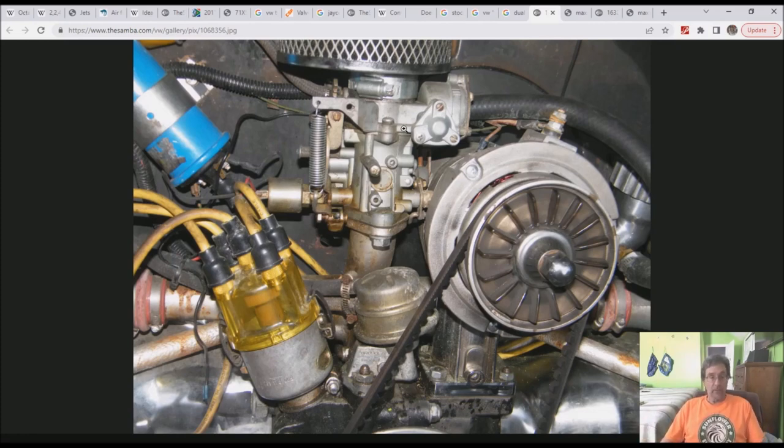From the factory they came with a carburetor like this - I think this is a Pict 34 of some sort. This kind of carburetor sits on top of a manifold. This happens to be dual port because it's got boots attached to a bunch of steel down here. It doesn't transfer heat particularly well.